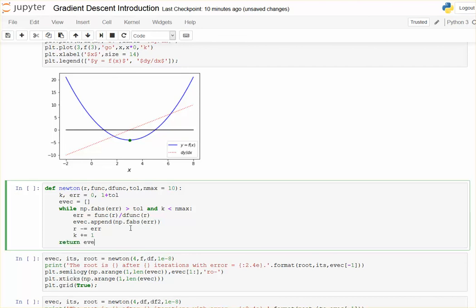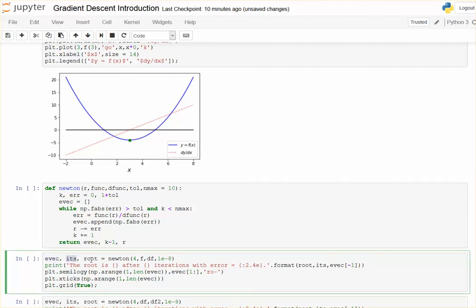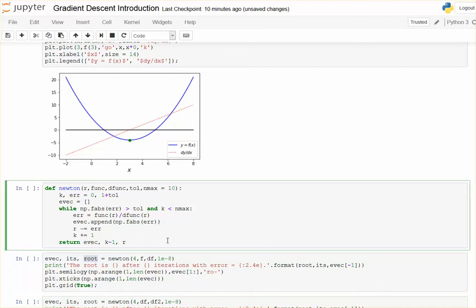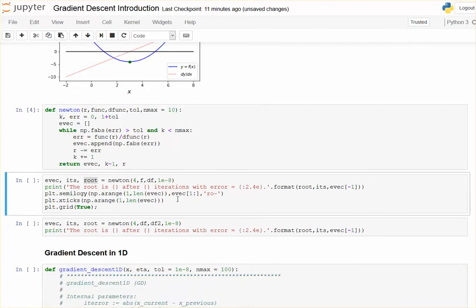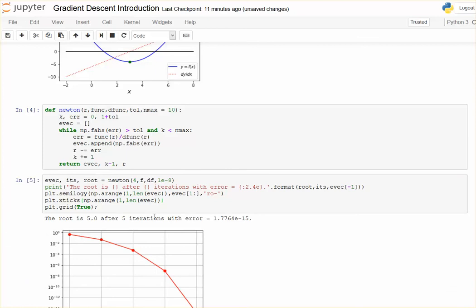So I'm going to return the iteration error. I'm going to return my iteration count and I'm going to return the number of roots. That's the order I'm going to have them in. So evac iterations and the root. And that should be Newton's method. And now let's run it with an initial guess of four and let's see how well it does.